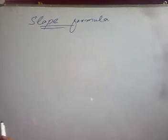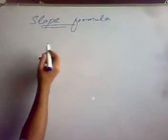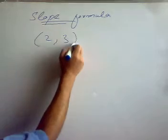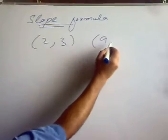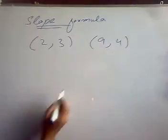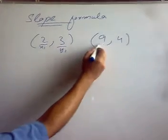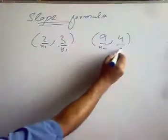To solve another example, let's consider a few other points: (2, 3) and (9, 4). And again this is x1, this is y1, this is x2 and this is y2.